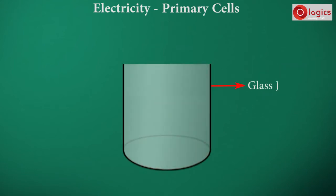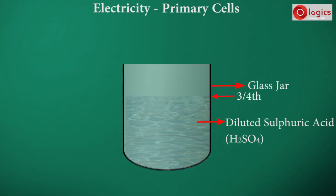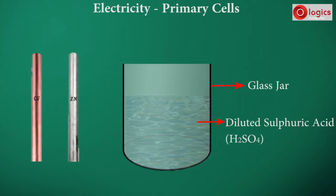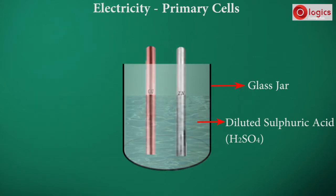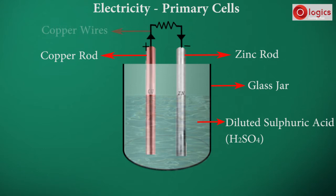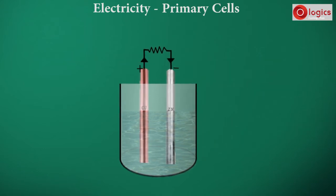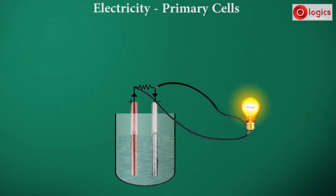Take a glass jar and dilute sulfuric acid up to three-fourths of the jar. Take a copper rod and a zinc rod and put them in the jar, such that half of each of them is immersed in the acid. Take two copper wires and connect each of them to the copper rod and the zinc rod. Electric current flows through these wires. Connect a bulb to these wires, and you can check the current flow.